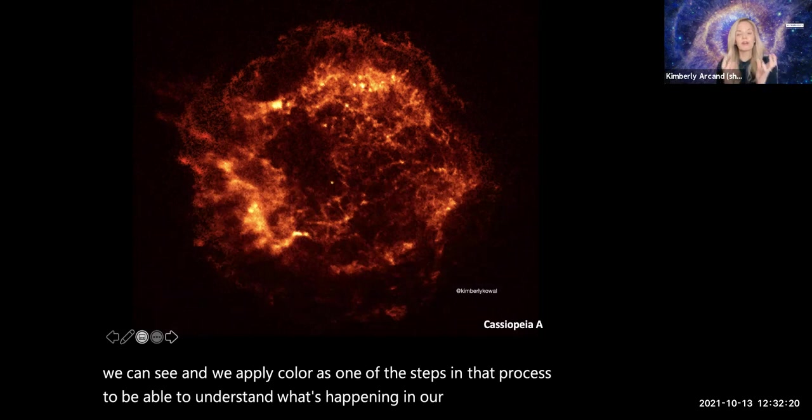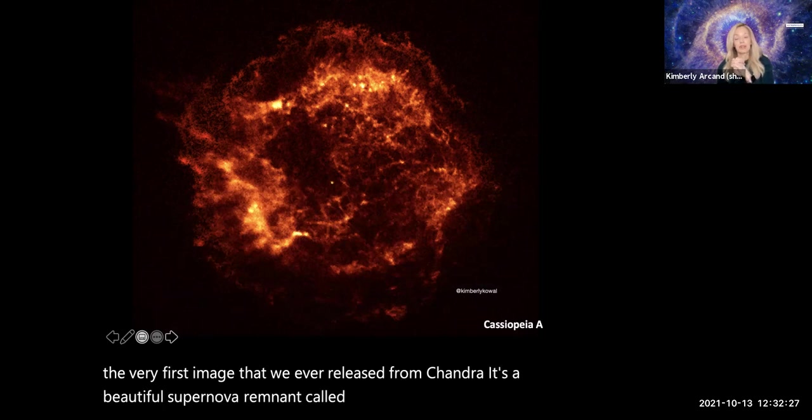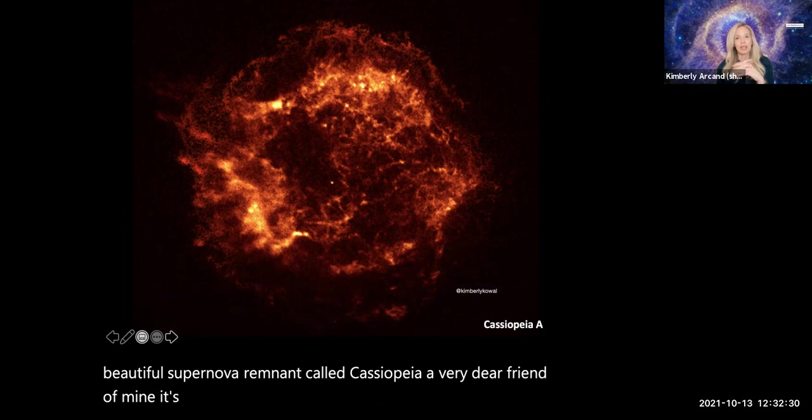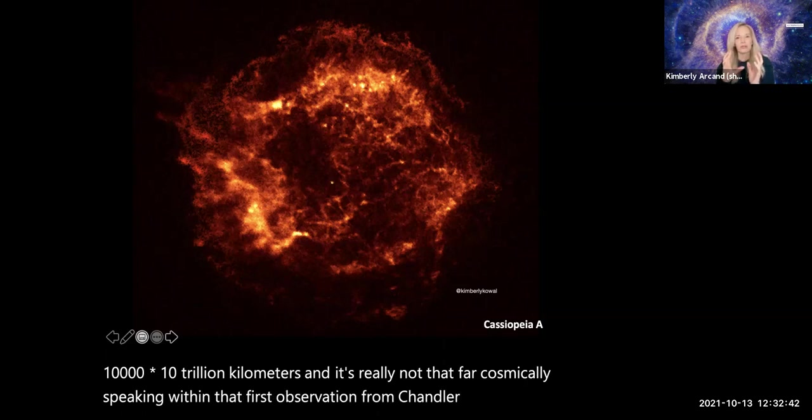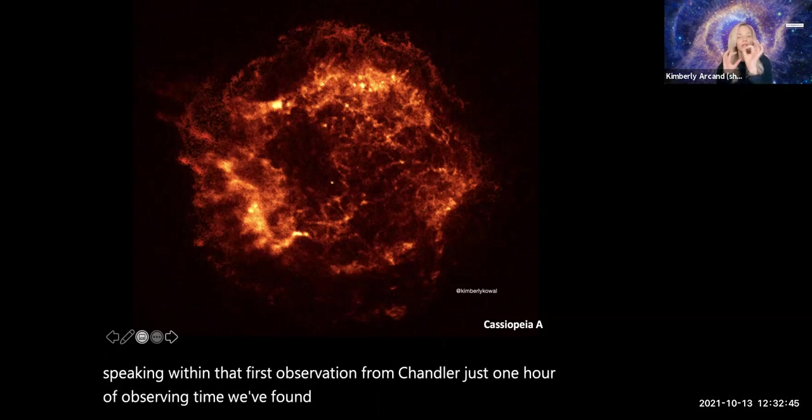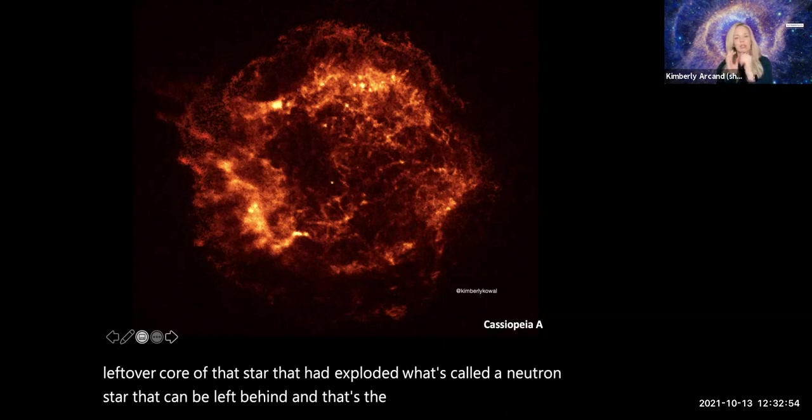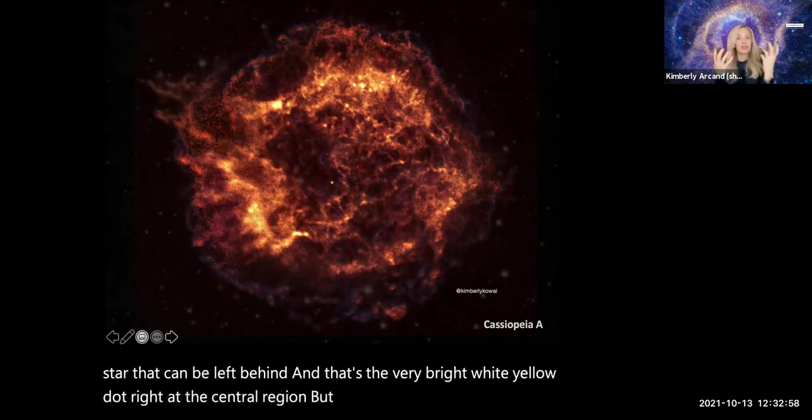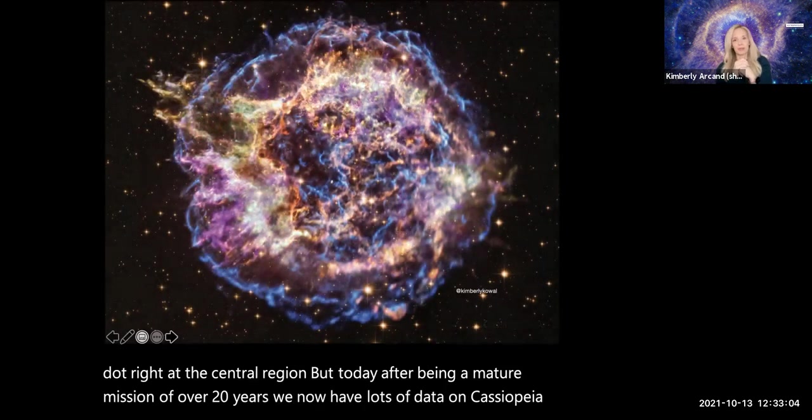So this is the very first image that we ever released from Chandra. It's a beautiful supernova remnant called Cassiopeia A, a very dear friend of mine. It's located 10,000 light years away in the Milky Way galaxy. Within that first observation from Chandra, just one hour of observing time, we found beautiful detail and also the leftover core of that star that had exploded, what's called a neutron star. But today, after being a mature mission of over 20 years, we now have lots of data on Cassiopeia A.